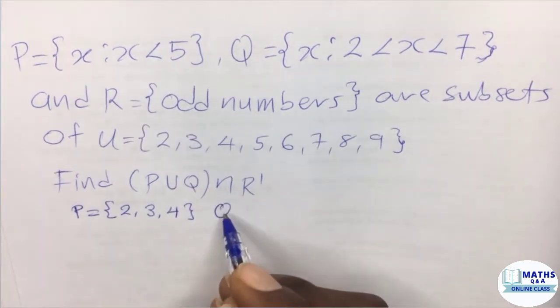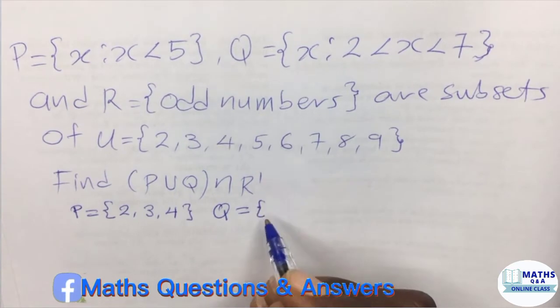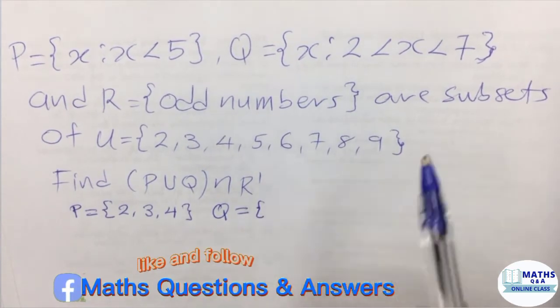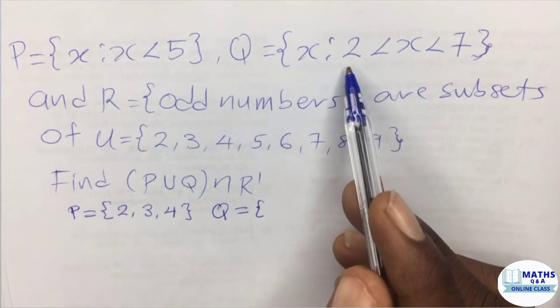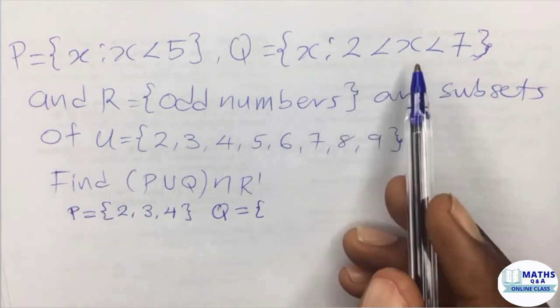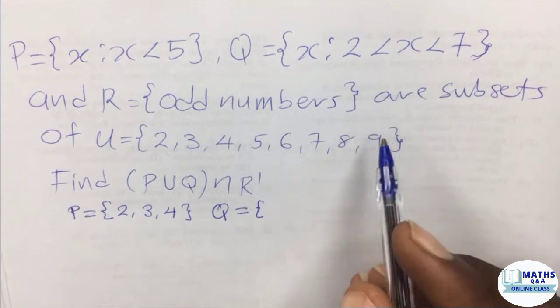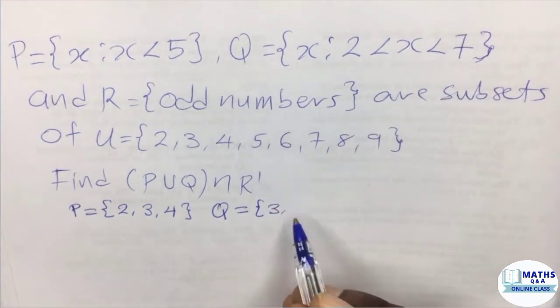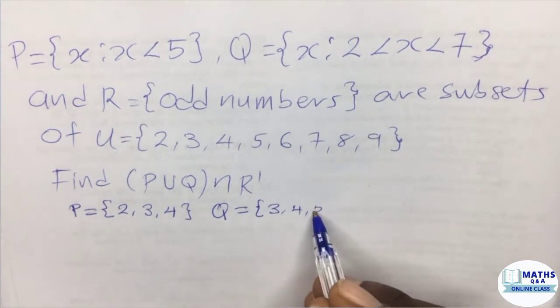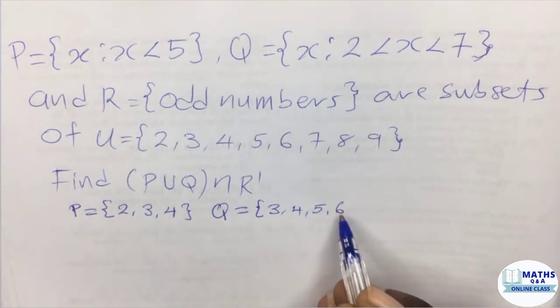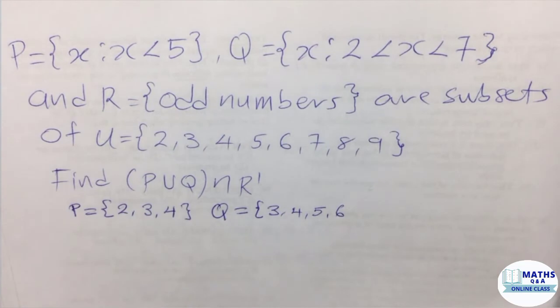The set Q, also comparing it to the universal set, 2 is not part of the set Q because we're saying that x is greater than 2. 3 is greater than 2, 4 is greater than 2, 5, and then 6. They are all greater than 2. But we're saying that at the same time, they are all less than 7.